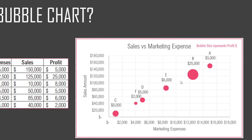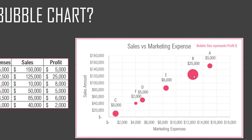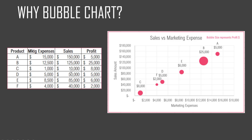We can also see how different each product is compared to the others by looking at the spatial location of those bubbles. On top of that, the size of the bubble represents the profit. For example, bubble B represents that product B has a profit of $25,000, located around $12,000–$14,000 of marketing expenses, and brought in a sales amount of around $120,000. I can infer insights not only for one product but also look at where it is relative to another product — these insights can be quickly obtained visually.